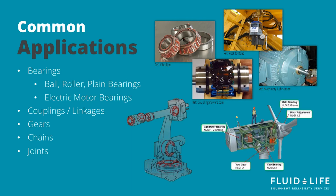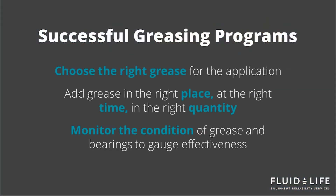Grease is used in pretty much every industry, and a lot of these applications tend to be overlooked from a condition monitoring perspective. A successful greasing program has three elements: using the right grease for the application, making sure that grease has been added in the right place at the right time and in the right quantity, and lastly monitoring the condition of the grease as well as the bearing or other component it's being used in to gauge the effectiveness of your lubrication program.